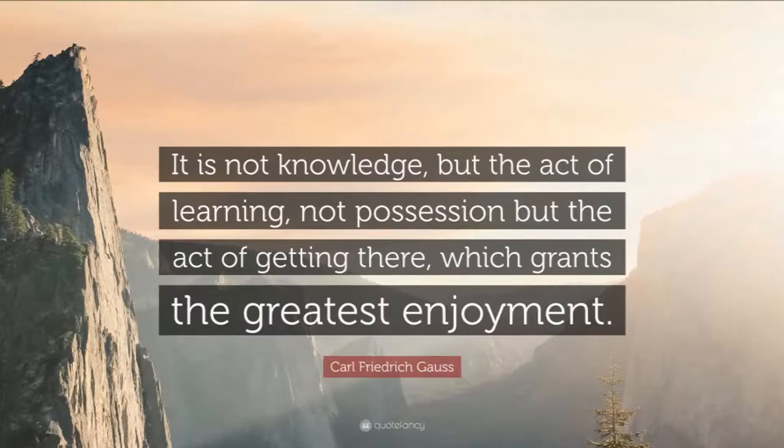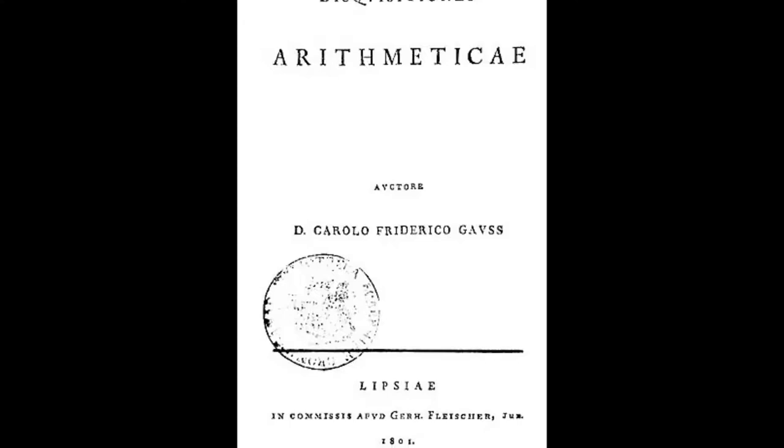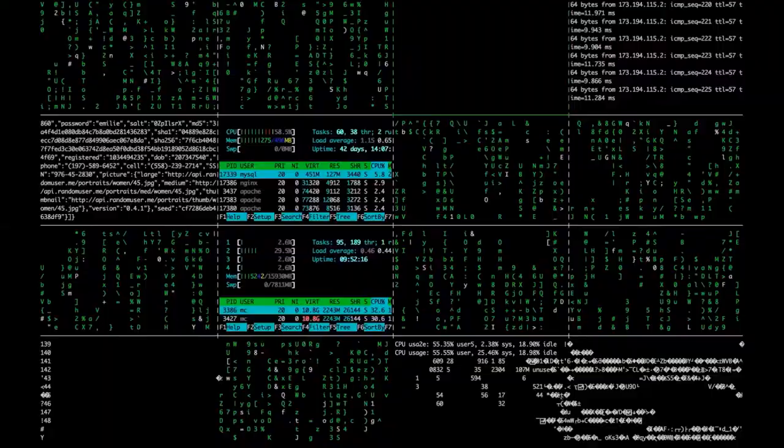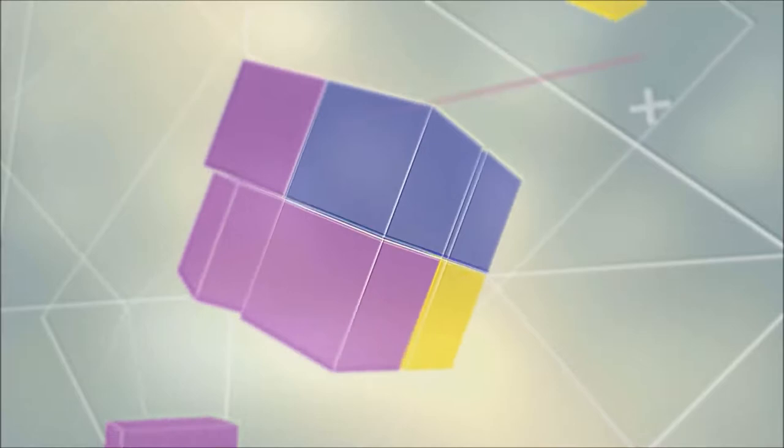Carl Friedrich Gauss was born to a poor family in Germany in 1777 and quickly showed himself to be a brilliant mathematician. He published Arithmetical Investigations, a foundational textbook that laid out the tenets of number theory - the study of whole numbers. Without number theory, you could kiss computers goodbye. Computers operate at the most basic level using just two digits, one and zero.